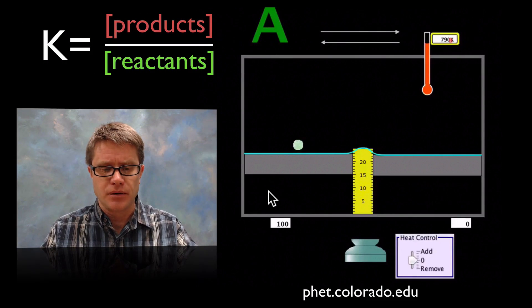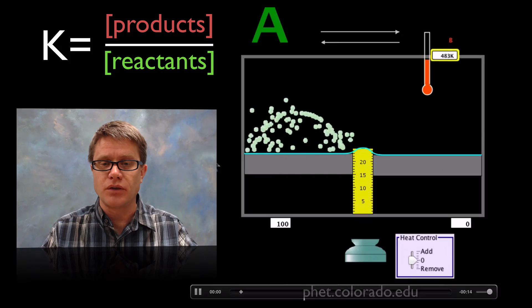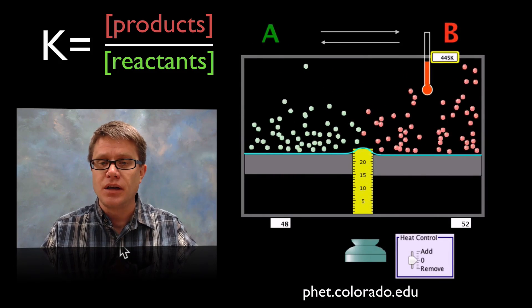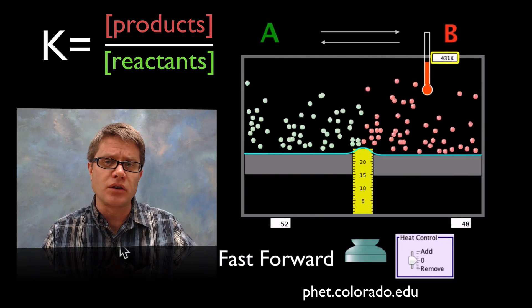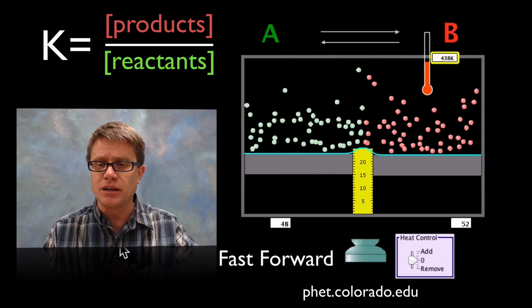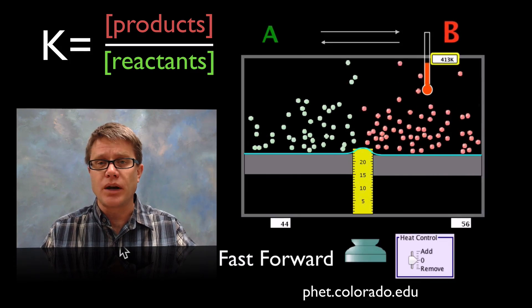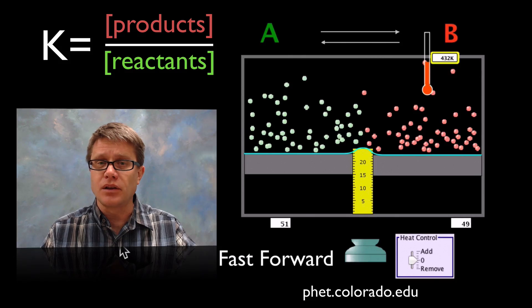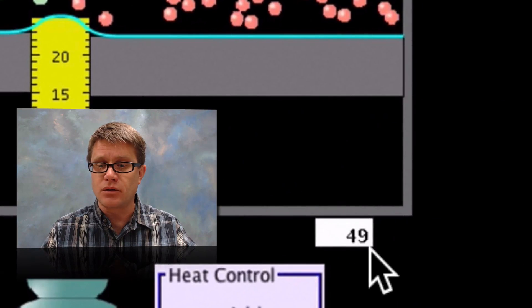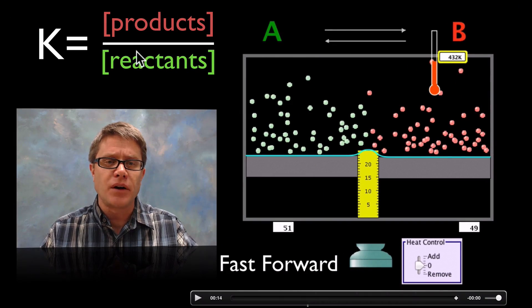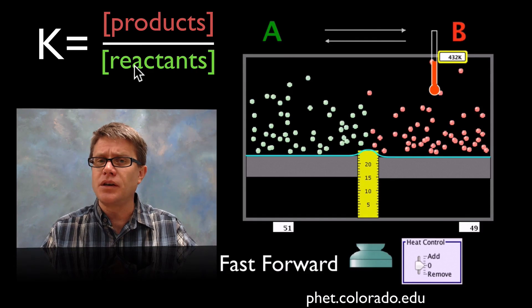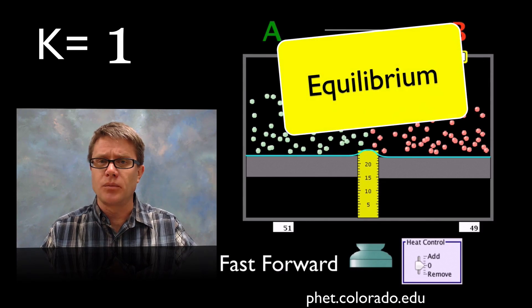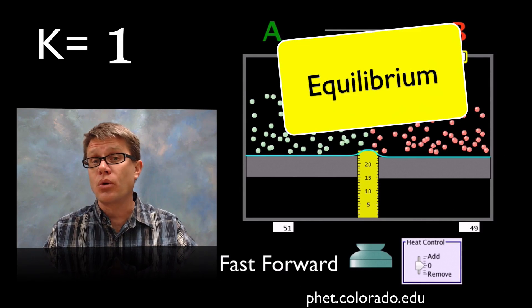Let's look at this first scenario — this is a PHET simulation. I'm going to put some molecules over here on the left side and they're going to spread out, acted on by gravity, bouncing back and forth. I started with 100 molecules on the left side, randomly dancing back and forth. As they move to the right side we change color, representing them as products. On the left side I have 51, on the right side I have 49. If I divide products by reactants — 50 over 50 — my K value is right around 1, so we're at equilibrium, not favoring either reactants or products.